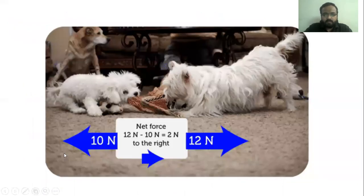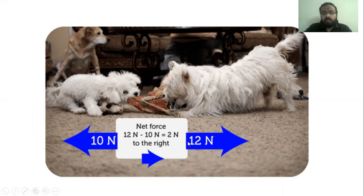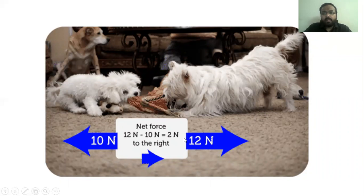As you can see in this picture, a force of 10 Newton and a force of 12 Newton are applied on an object in opposite directions. The net force is the difference of the two forces, which comes out to be two Newton. The object will displace in the direction where the magnitude of force is greater.